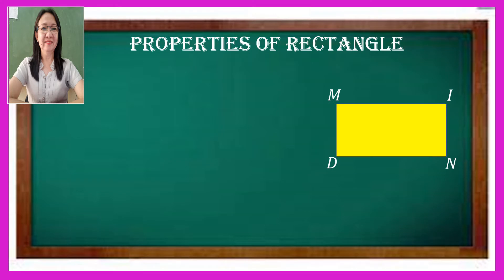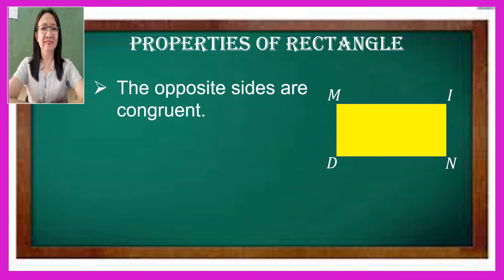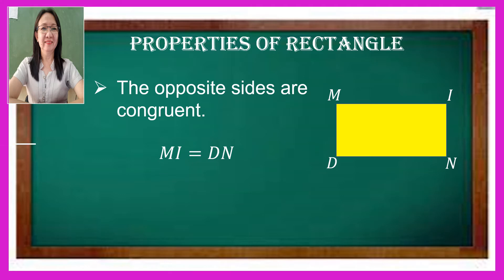Another property of rectangle is that their opposite sides are congruent. So side M-I is congruent to side D-N, and similarly side M-D is equal in length to side I-N.